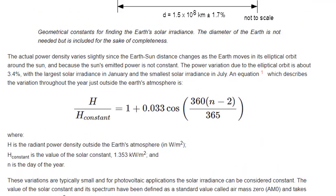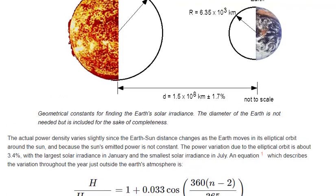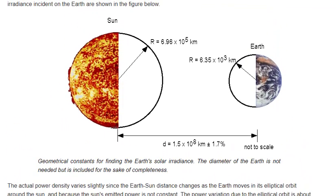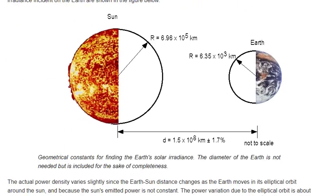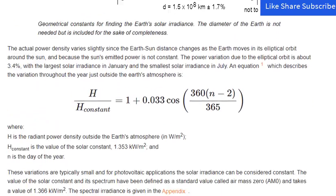These variations are typically small and for photovoltaic applications the solar irradiance can be considered constant. The value of the solar constant and its spectrum have been defined as a standard value called air mass zero, AM0, and takes a value of 1.366 kilowatts per square meter.